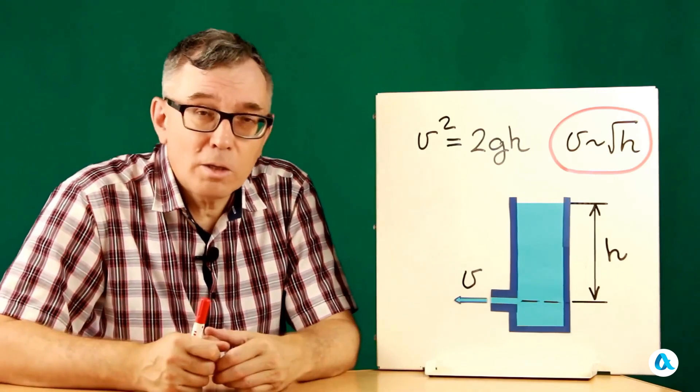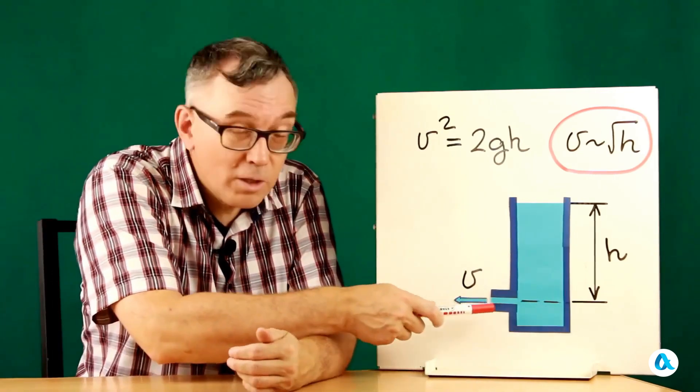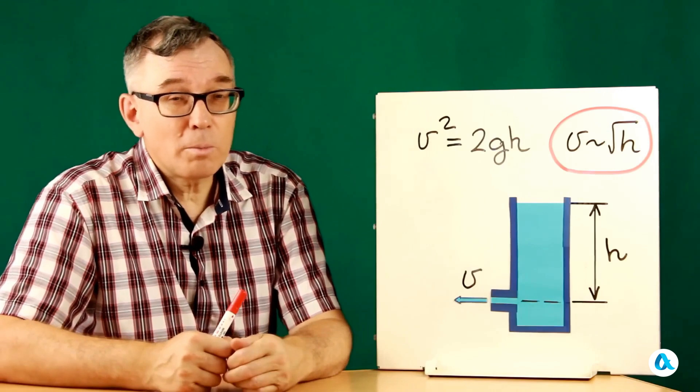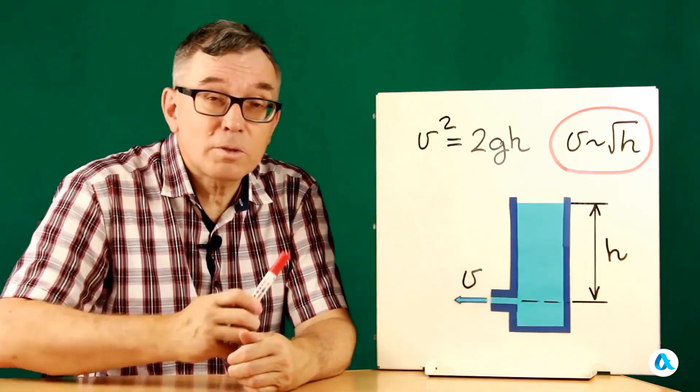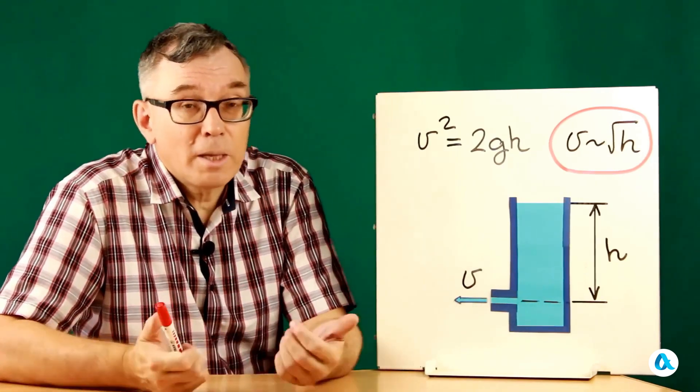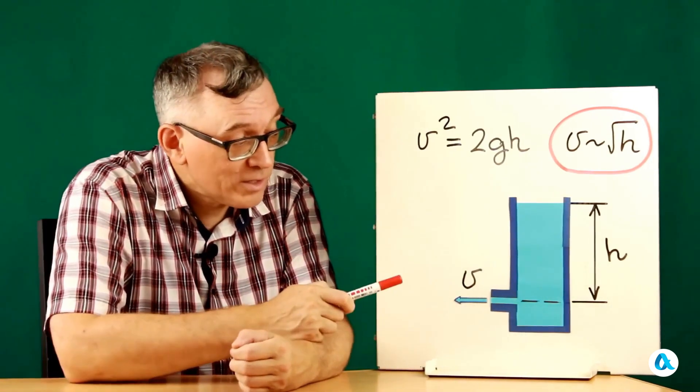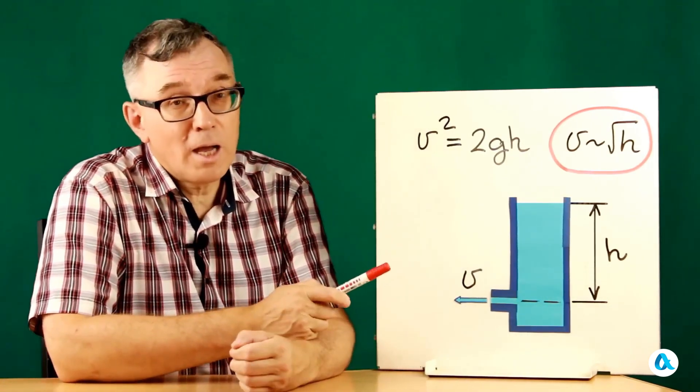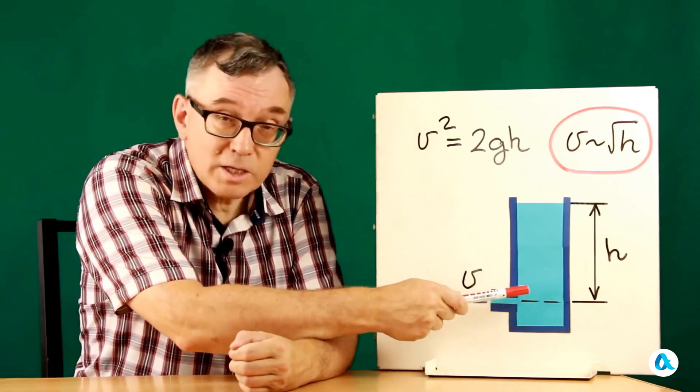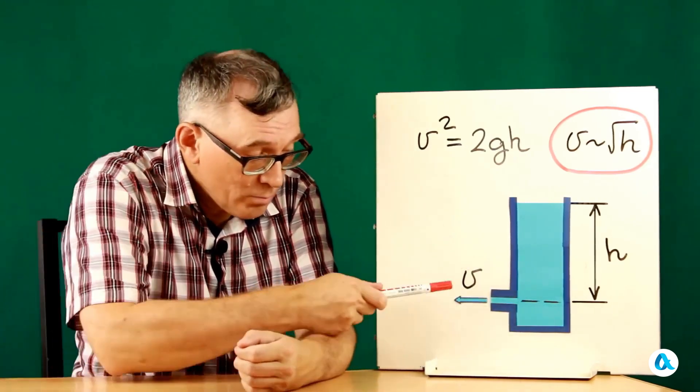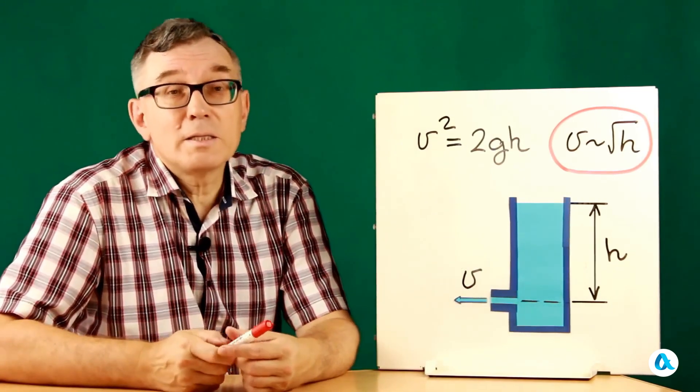And if the liquid were ideal and there were no various losses in the tube, the outflow speed would be determined by Torricelli's formula, v² equals 2gh. But in any case the flow rate is proportional to the square root of the height of the liquid column. So the lower the height of this column, the lower the liquid level drops, the slower the water flows out and the less its consumption.